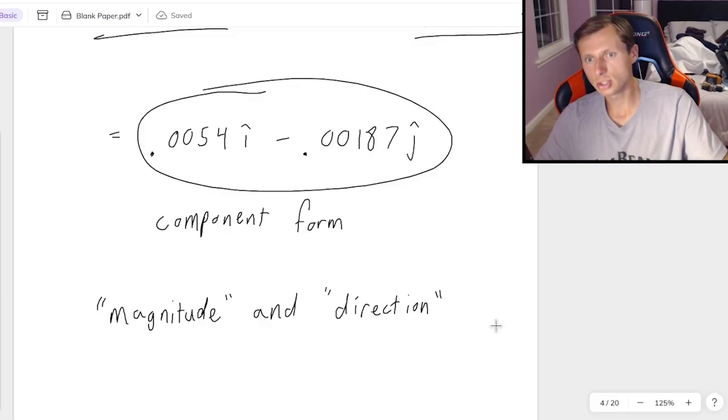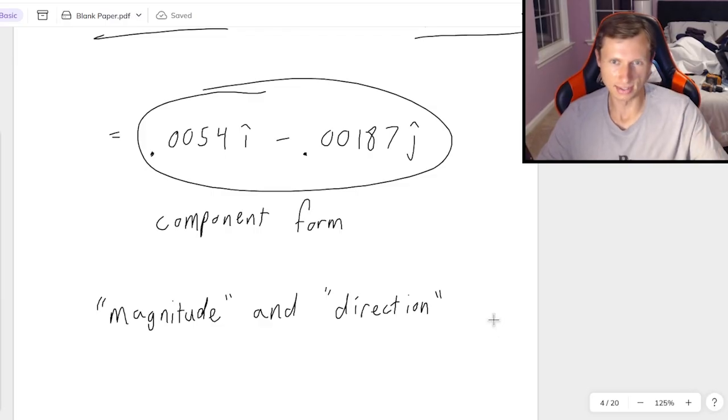Sometimes they're going to ask for magnitude and direction. If they ask for magnitude and direction, then I'm not done the problem yet. If I want to find the magnitude and direction of this, the first thing I do is I make yet another right triangle. Yes, I know, it's great. We love right triangles.